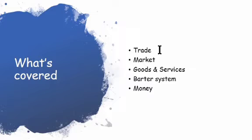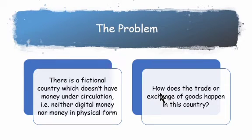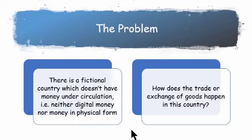Now let us understand this particular problem. Pause for a few seconds and try to think of the answer. There is a fictional country which does not have money under circulation — neither in physical form such as cash, nor digital money such as e-wallets. The problem is: how does trade happen? How do people exchange goods in this particular country? The answer could be the barter system, which we are going to study further.